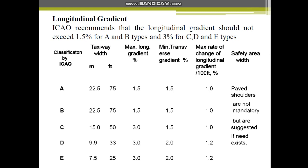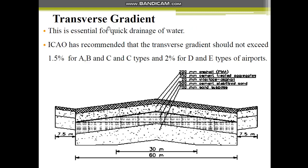The longitudinal gradient is the slope along the length of the taxiway. ICAO recommends that the longitudinal gradient should not exceed 1.5% for Type A and B airports and 3% for Type C, D, and E airports — this classification is based on runway length as discussed in a previous lecture. A table in your textbook gives taxiway width, maximum longitudinal gradient, minimum transverse gradient, and maximum rate of change of longitudinal gradient for different airport types.